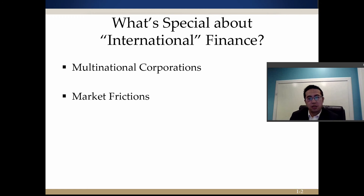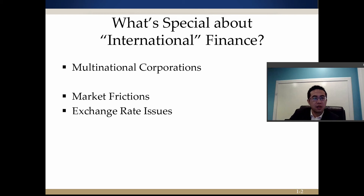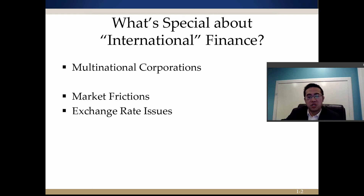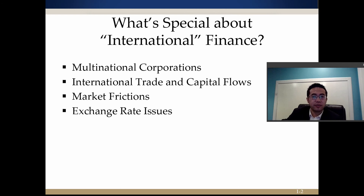Another specialty of this subject is market friction. Market friction comes from different price dynamics for the same kind of products across borders. There are definitely exchange rate issues. In this class we're not just talking about US dollars but also euros, Japanese yen, Swiss franc and so on. What the exchange rate is, how it is determined, what the volatility is, and how to control for that risk are all covered in this class. We will also talk about international trade and capital flows.